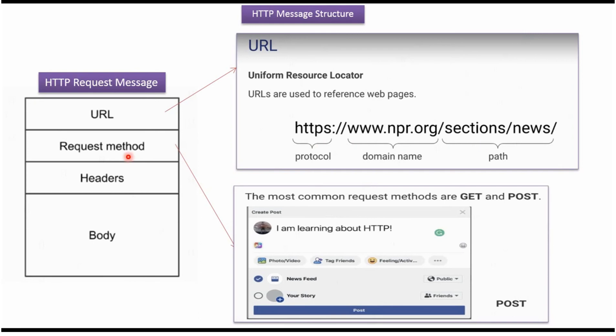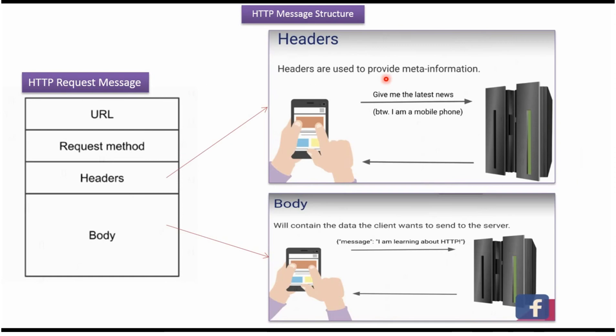There are different types of request methods. The most commonly used request methods are GET and POST. Using GET, we can retrieve information from the server. Using POST, we can write information to the server.